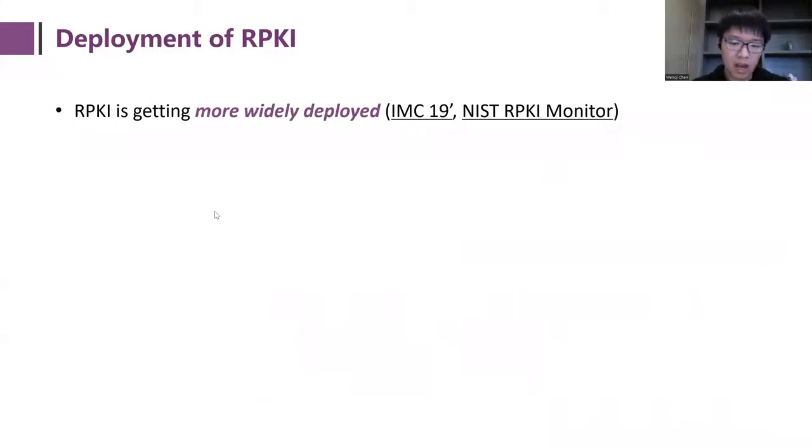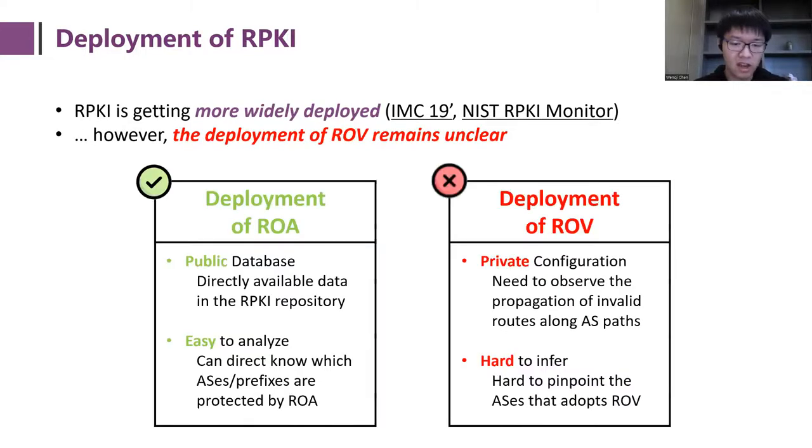With the development of RPKI, many researchers and projects are devoted to measuring the deployment of RPKI. However, the deployment of ROV still remains unclear. Unlike measuring the deployment of ROA, which has directly available data in the RPKI repository and is relatively easy to analyze, the measurement of ROV deployment is more difficult to perform.